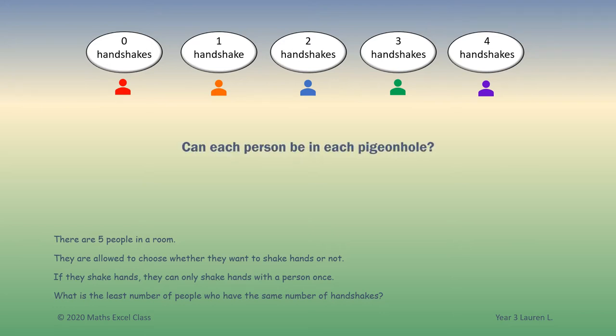Can each person be in each pigeonhole? If one person does not handshake, then it is not possible to have one other person shake hands with four other people.